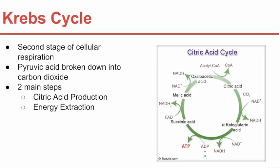The cells start with the Krebs cycle, the second stage of cellular respiration. It's named after Hans Krebs, the British biochemist who demonstrated its existence in 1937. During the Krebs cycle, pyruvic acid is broken down into carbon dioxide in a series of energy-extracting reactions. There are two main steps: citric acid production and energy extraction. Make sure you follow along closely.